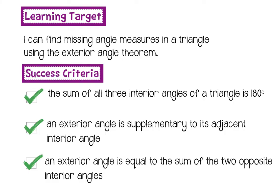You need to know these three things. One, the sum of all three interior angles of a triangle is 180 degrees. Two, an exterior angle is supplementary to its adjacent interior angle, which means they also sum to 180 degrees. And since that is true, the exterior angle is equal to the sum of the two opposite interior angles.